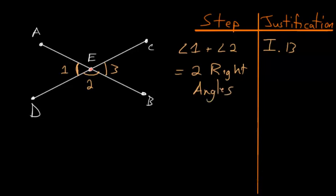We can again use this same argument, but this time using different straight lines. So we can use the straight line DC and the line coming off of it, EB, and using this Book 1, Proposition 13, we know that this angle here and this angle here must add up to two right angles. So we have that angle 2 plus angle 3 must be equal to two right angles.